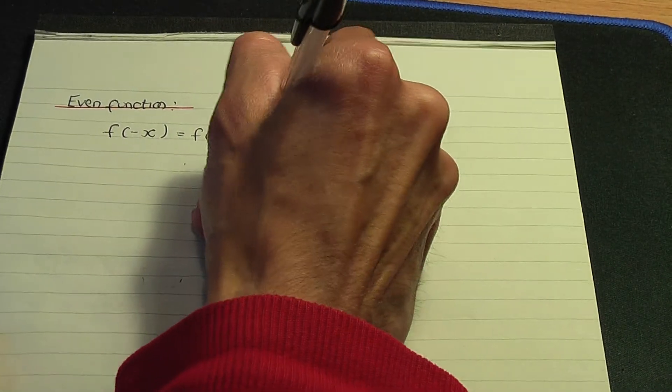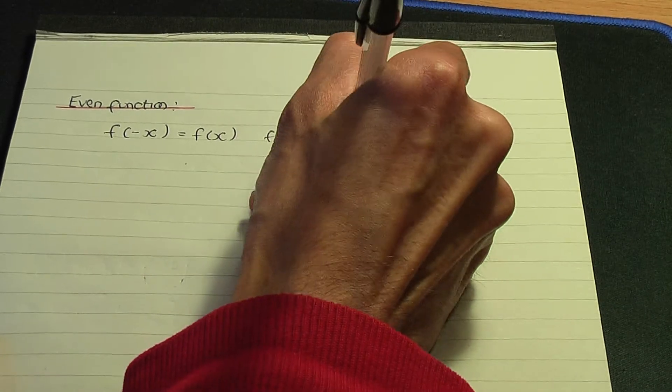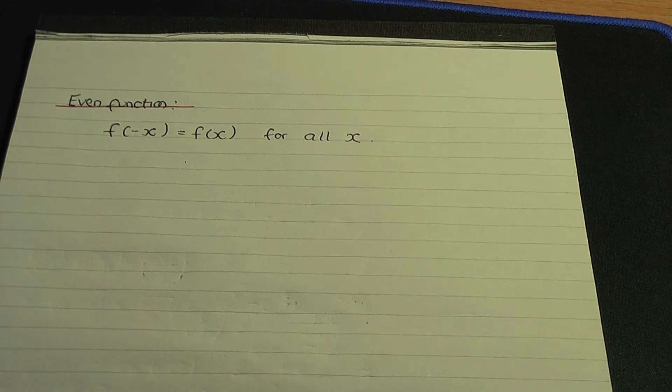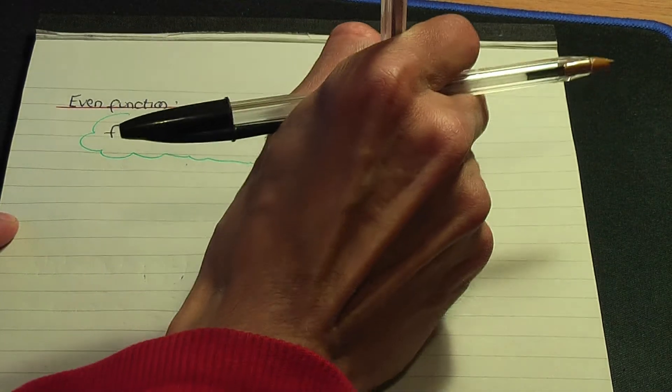First of all, let me explain what even and odd functions are. Here's a definition. For the function to be even, f of minus x is equal to f of x for all values of x. That is the criteria for even functions. Let me use a green pen to make it stand out.